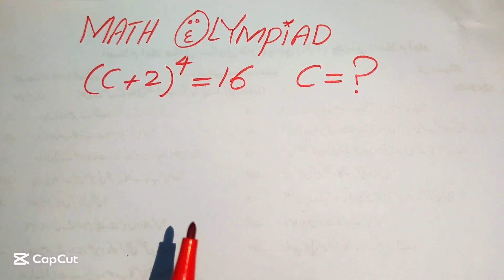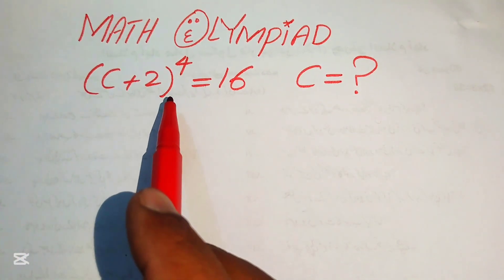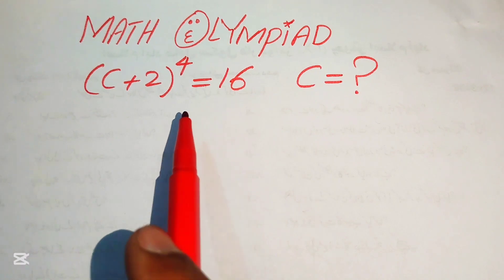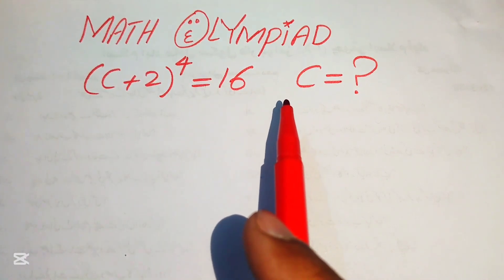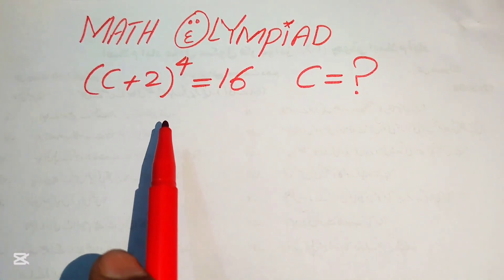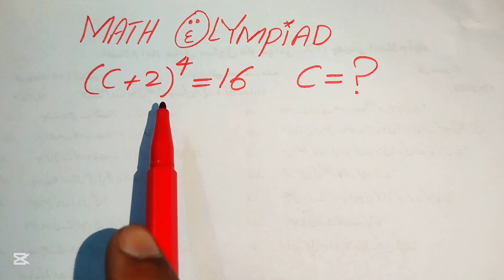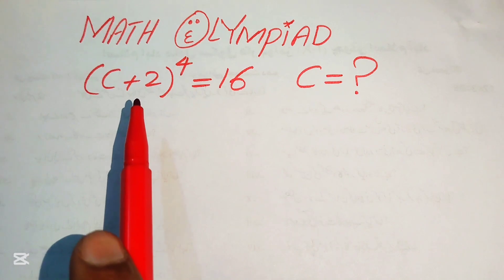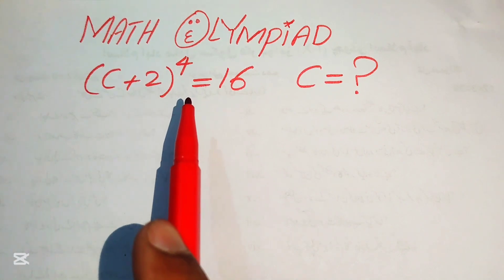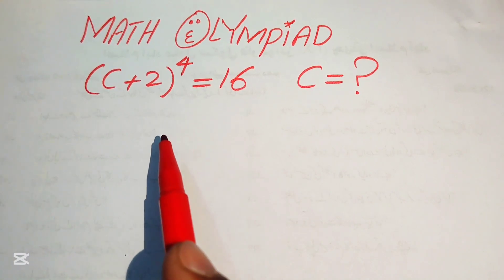Hello everyone, welcome. We have a nice algebra problem: (C + 2)^4 = 16, and we need to solve for the values of C. Since this is a fourth-order equation, we need to find all four roots of this equation.